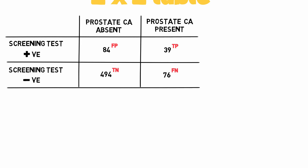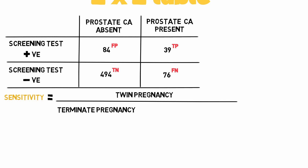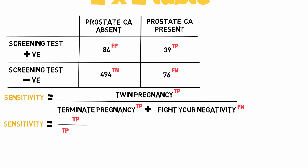We're now going to go through a number of statistical equations without going into the background at all. The first one is sensitivity. To remember it, imagine: a young lady is 23 weeks pregnant and she has a twin pregnancy (TP), she decides to terminate the pregnancy (TP), and you have to fight your negativity (FN). So sensitivity equals true positive divided by true positive plus false negative, which equals 39 over 39 plus 76, which equals 0.34 or 34%.